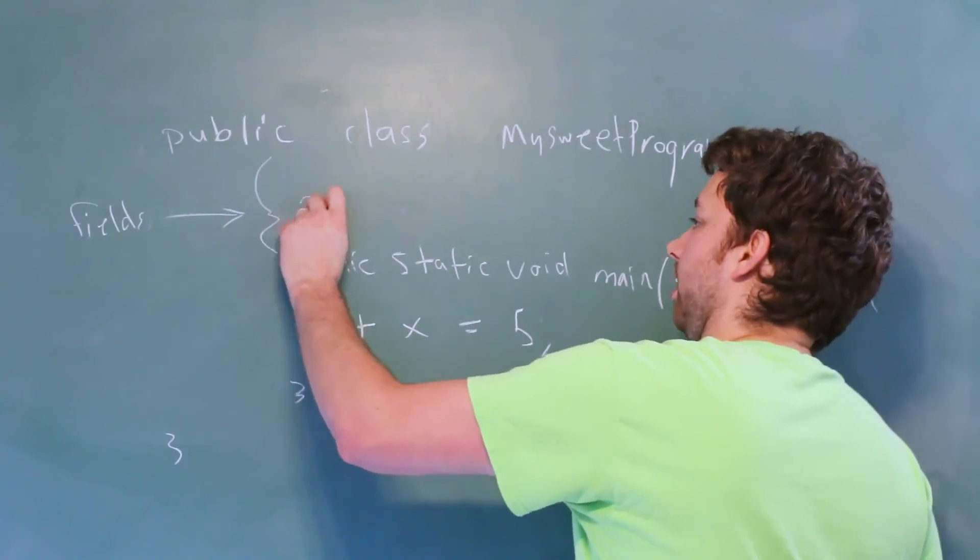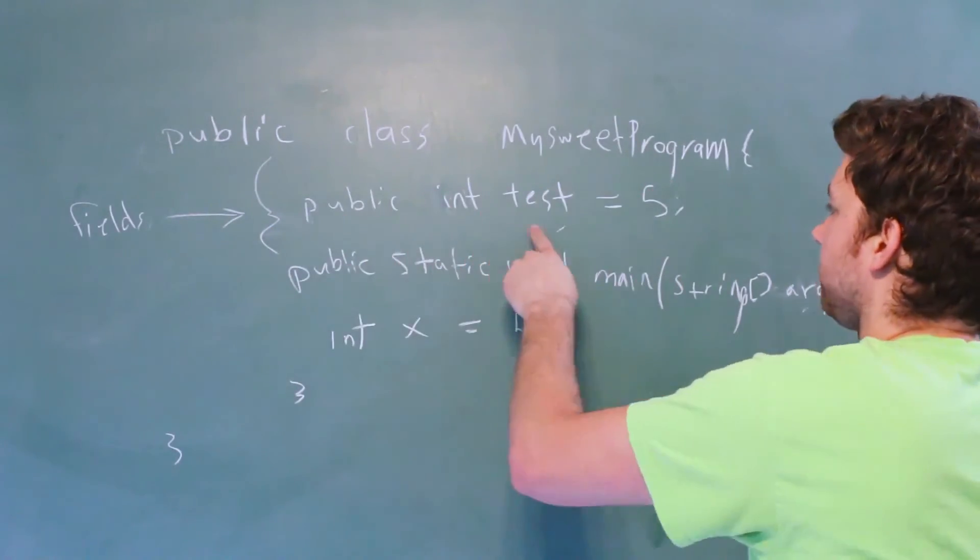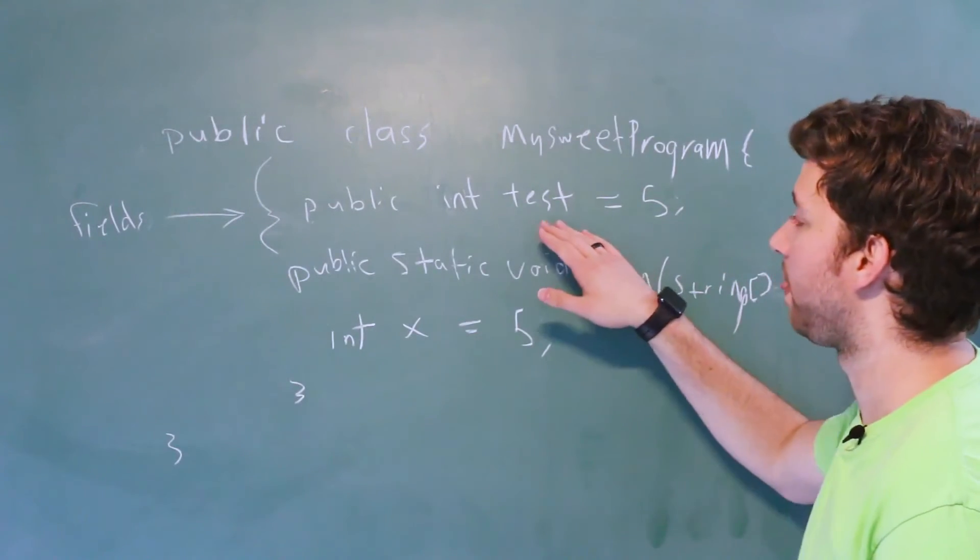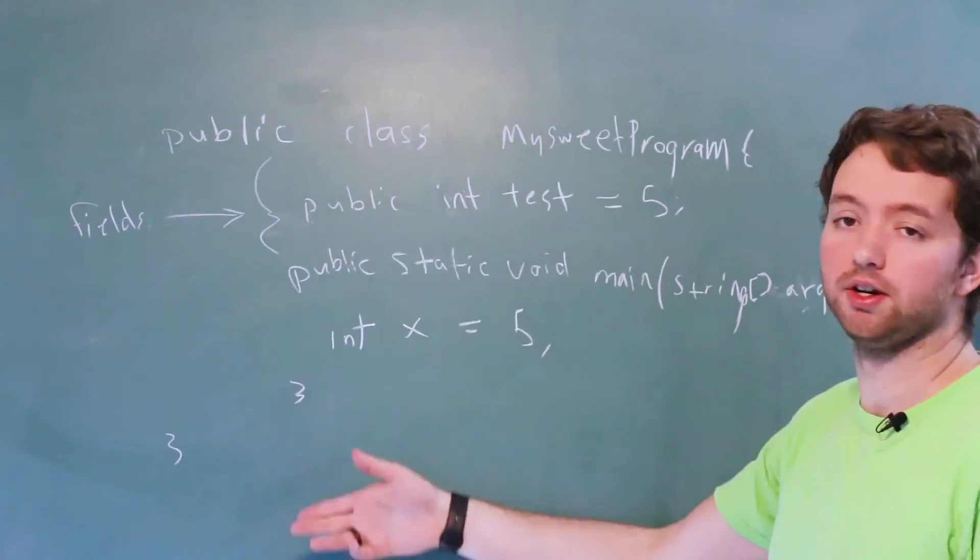So we can go in here, we could say public int test is equal to five, and now this variable is made accessible everywhere inside of this class.